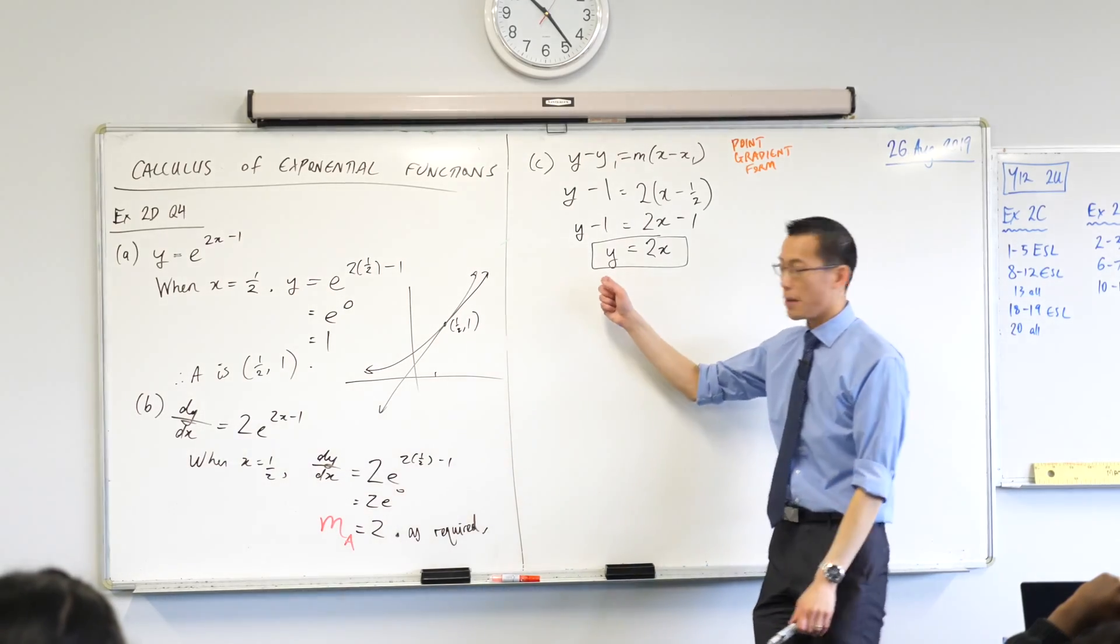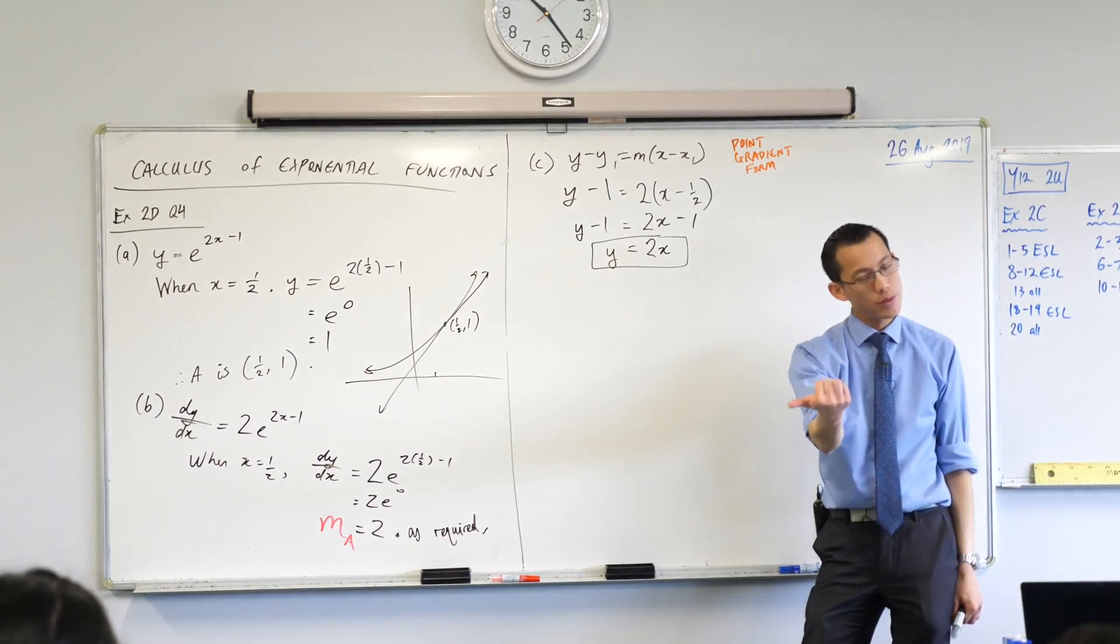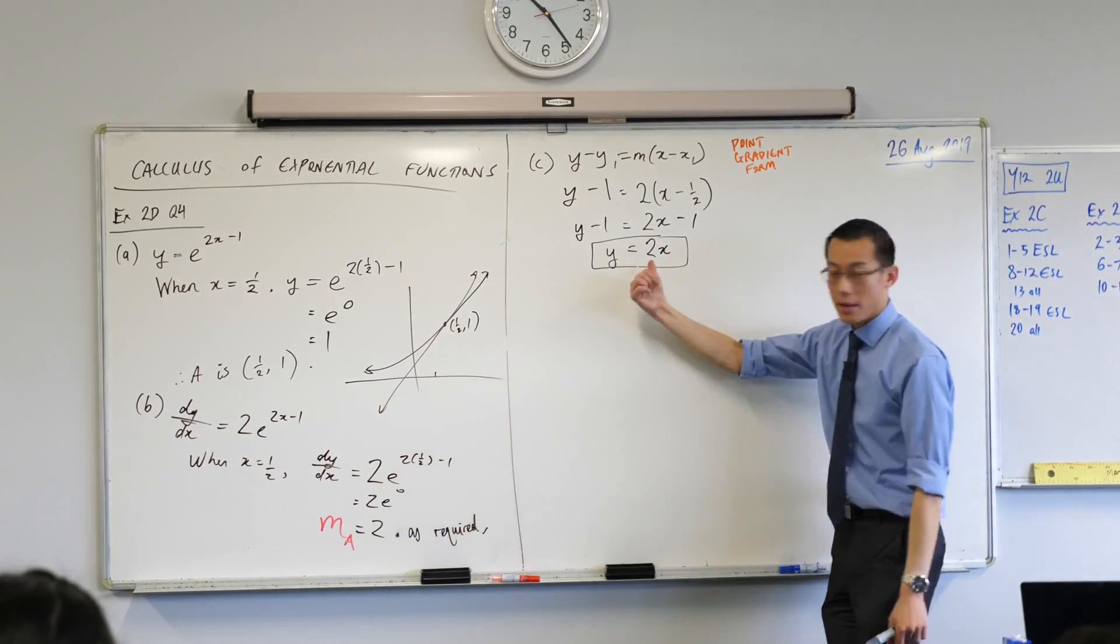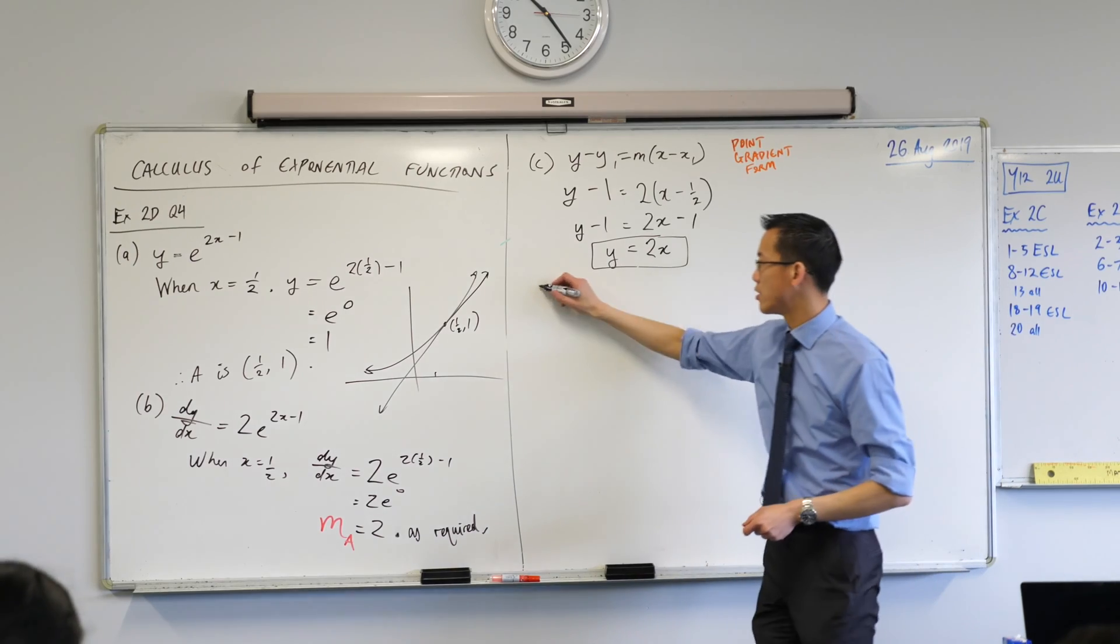So let me just make sure I rehearse that. Ashan, tell me if I got it right. We know where the origin is. It's (0, 0). X equals 0 and y equals 0. So I should be able to take both of those, pop them in here, and it should satisfy this equation. So let's go ahead and do that.